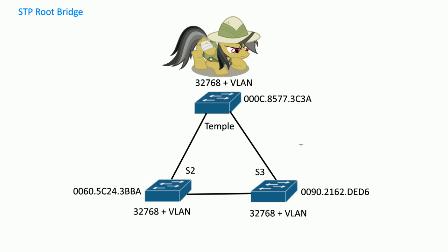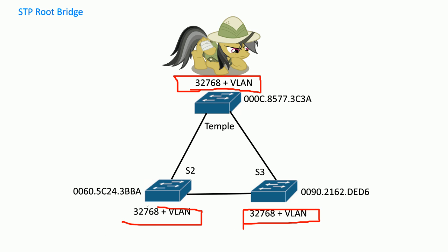In order to find the root bridge, you first look at the priority number. The priority by default on Cisco switches is 32768 plus the VLAN number, because you can have multiple spanning trees per VLAN — that's PVST+. Right now, out of the box, all these switches are 32768. The lower the number, the better, so whoever has the lowest priority number wins and becomes the root bridge. But right now they're all tied, so that won't work.